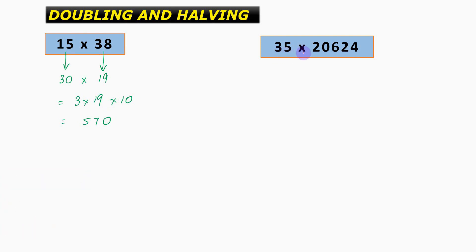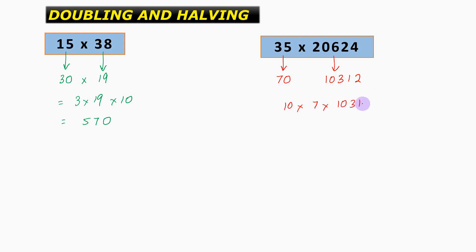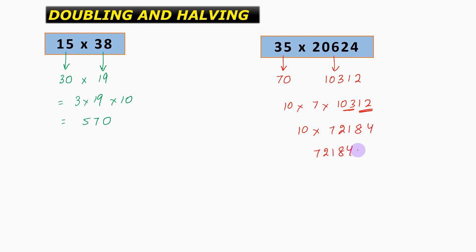The next question is 35 into 20624. Again, we multiply 35 by 2 giving us 70, and divide 20624 by 2 giving us 10312. Now all we need to do is multiply these numbers: 10 into 7 into 10312. So 7 into 10312: 7 into 1 is 7, 7 into 03 becomes 21, 7 into 12 becomes 84. This is 10 into 72184, and hence finally the answer will be 721840.